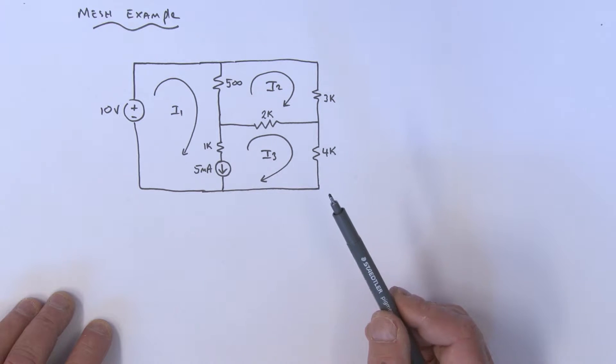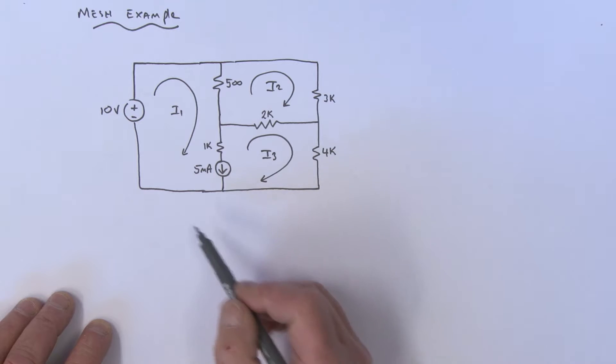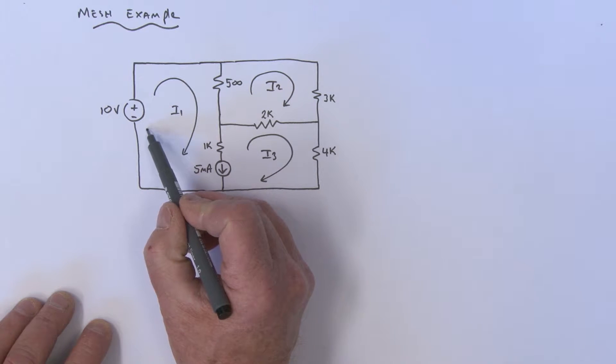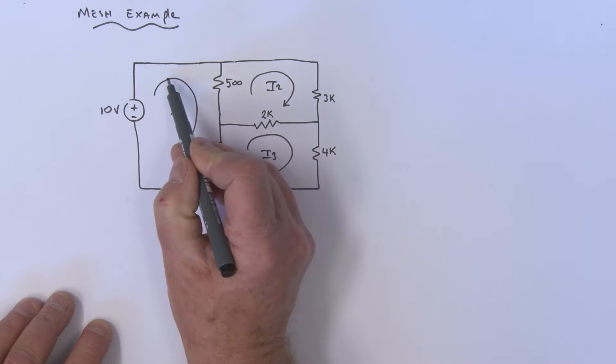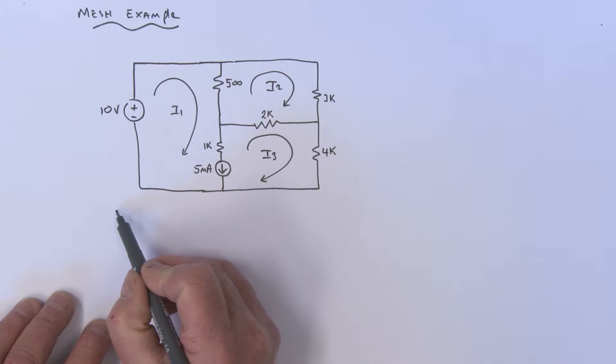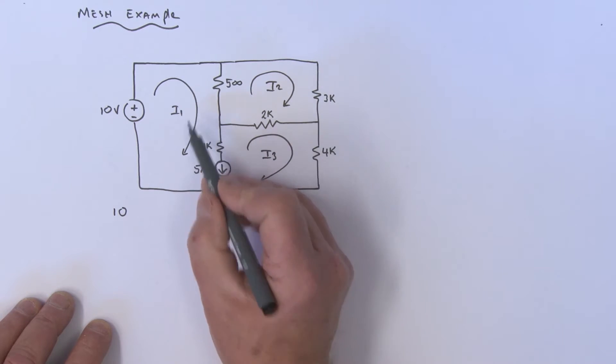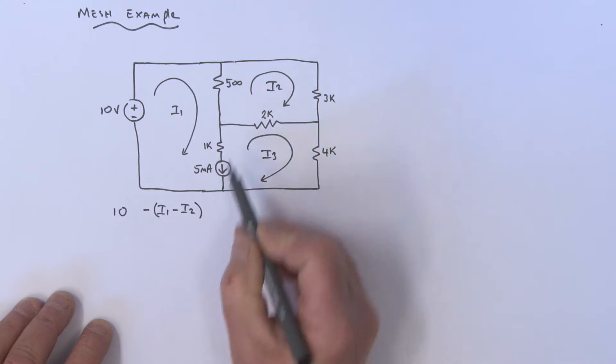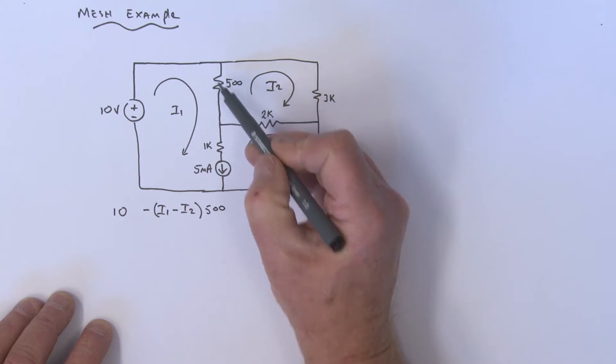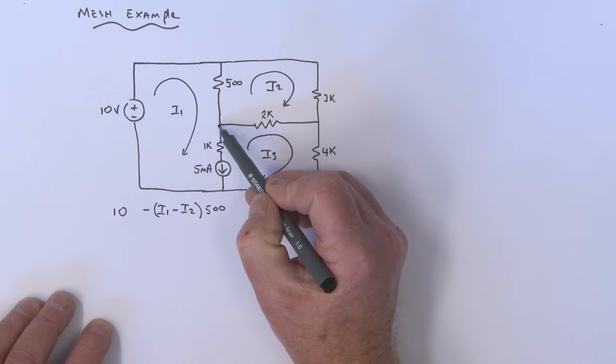We're going in this direction, going up in polarity. We've got a 10V. We come across this component where I1 is leading, so we have minus (I1 - I2) times 500 ohms.